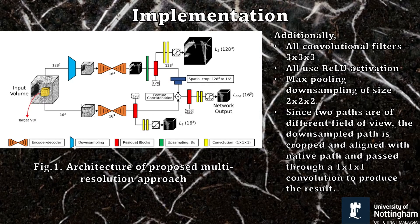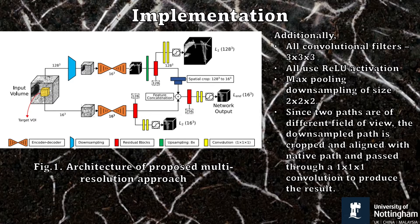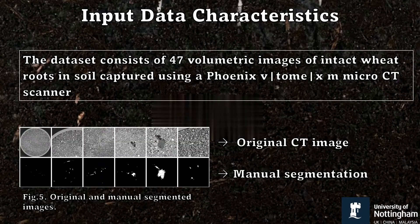During training, the loss — that is the difference between the predicted and actual values — called binary cross entropy loss, is calculated and fed to an algorithm called stochastic gradient descent to change the parameters of the network.